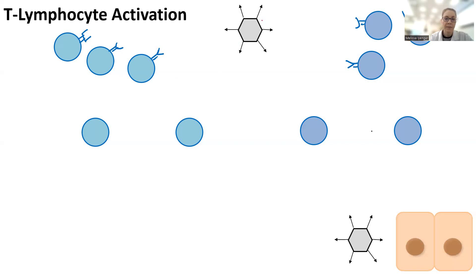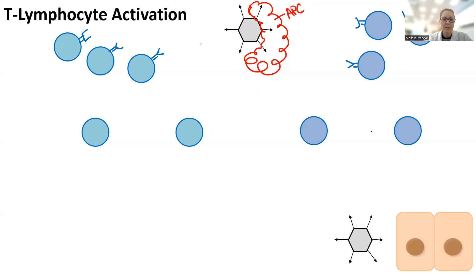When the pathogen enters the lymph node, one of the first things that's going to happen is it's going to be phagocytized — basically eaten by an antigen presenting cell. This antigen presenting cell is oftentimes a macrophage. The macrophage eats the virus, breaks it down, and takes part of the surface antigen, and presents that antigen on its surface.